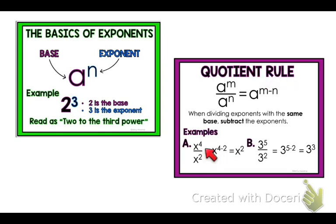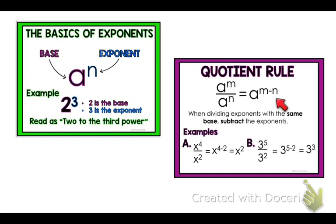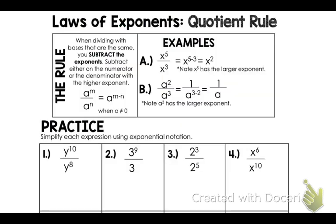For example, if you have x to the fourth over x to the second power, you would write x to the four minus two — subtracting instead of adding. Same for three to the fifth over three to the second power: you're subtracting. Technically you always want to do m minus n, but that can result in a negative power.